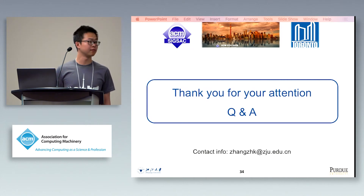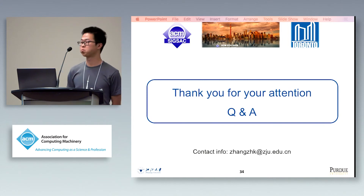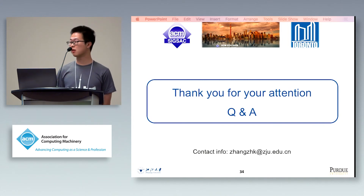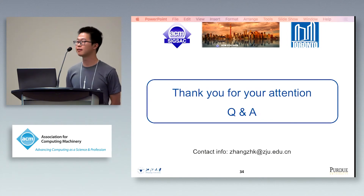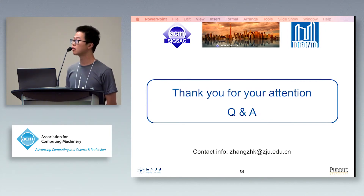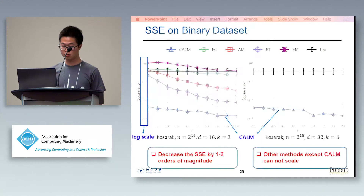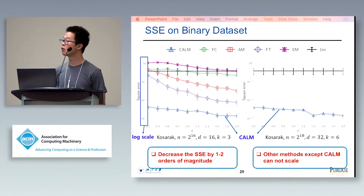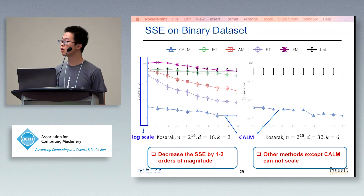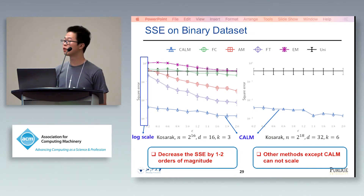We have time for a couple of questions. In your graphs for the CosaRec dataset — can you quickly go back to those experimental graphs? I think you show the squared error to be less than one. Are you normalizing over something? If you're normalizing, 0.1 squared is less than 0.1 — so what's the impact on these results?